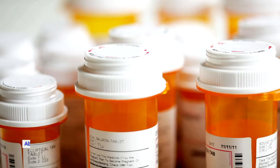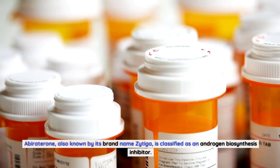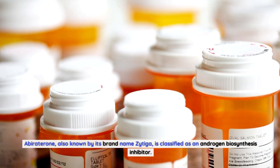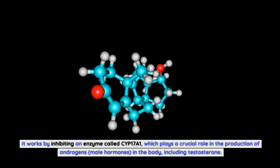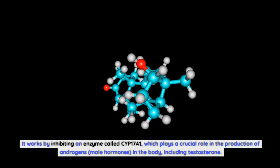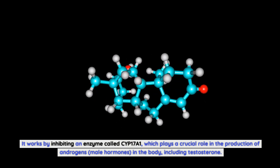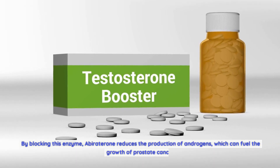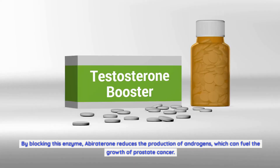Mechanism of action of abiraterone: abiraterone, also known by its brand name Zytiga, is classified as an androgen biosynthesis inhibitor. It works by inhibiting an enzyme called CYP17A1, which plays a crucial role in the production of androgens — male hormones in the body, including testosterone. By blocking this enzyme, abiraterone reduces the production of androgens, which can fuel the growth of prostate cancer.